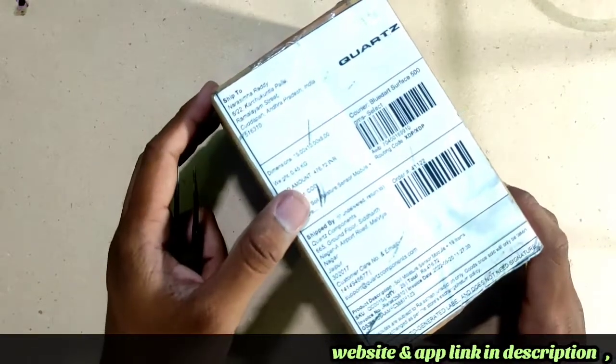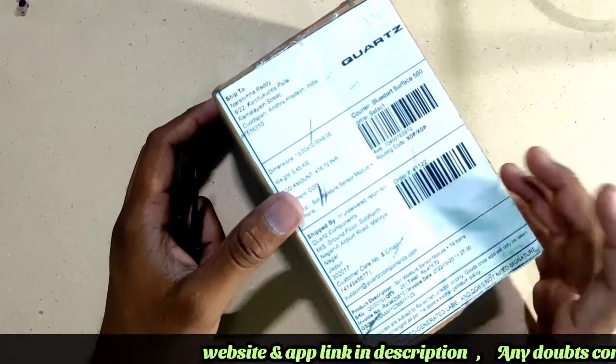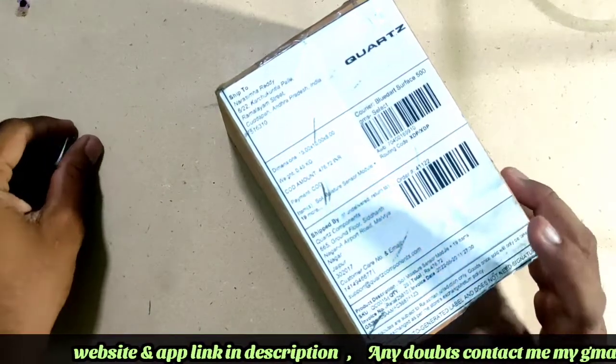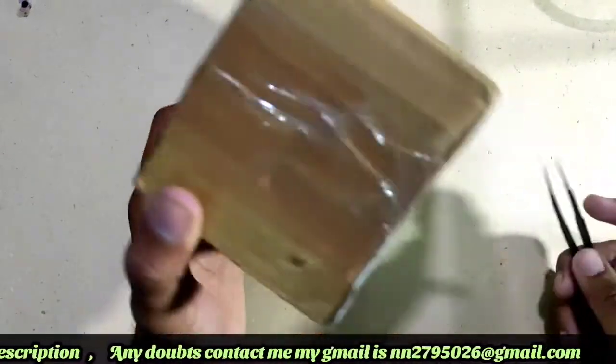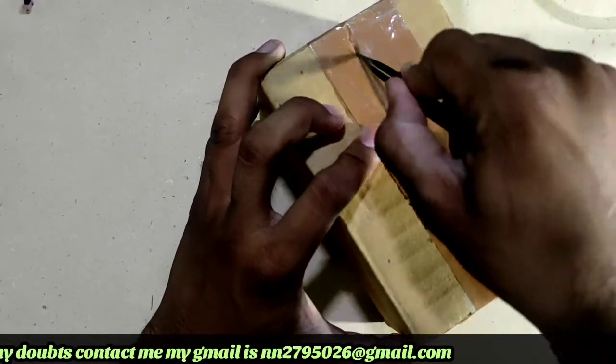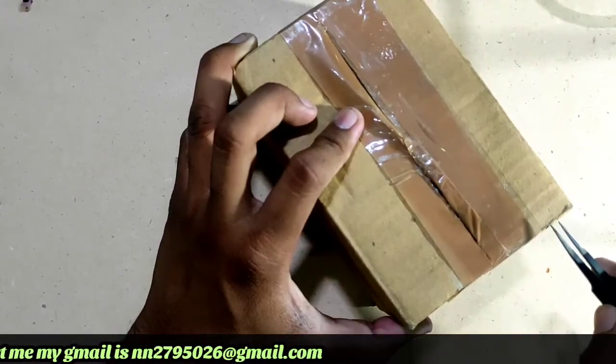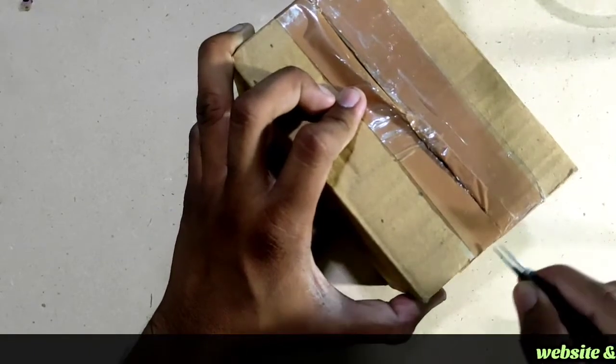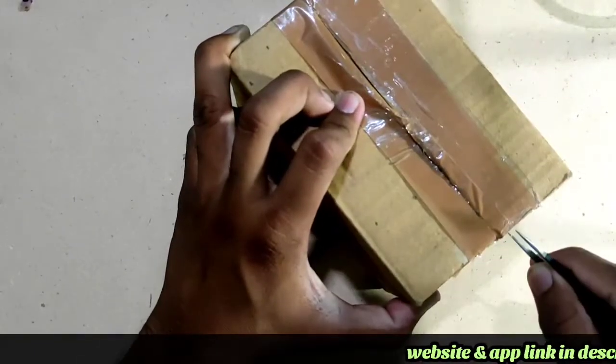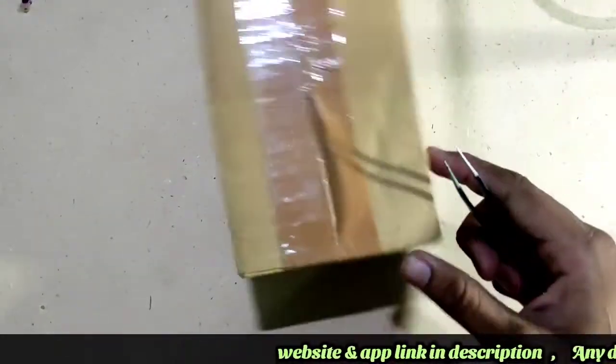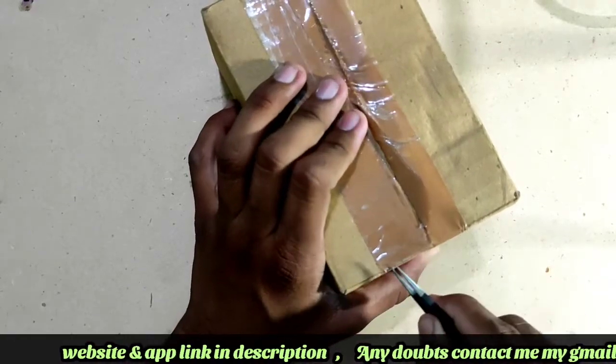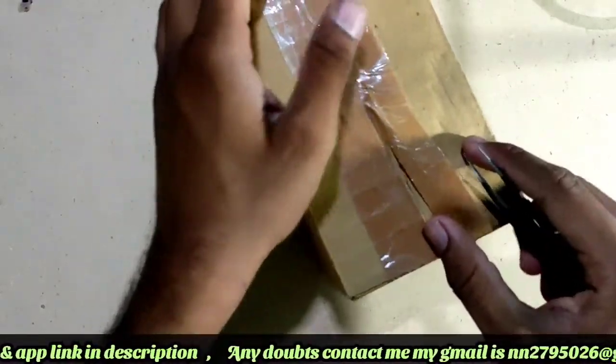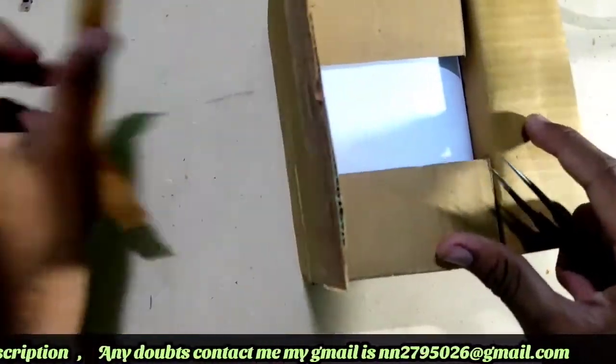Ok guys, I am going to start the unboxing. I ordered it on an online website. I have the total cost to buy 476. I am going to start the unboxing. Delivery charges are 70, taxes are 76. At the same time, it's around 300 rupees. So, let's open it.